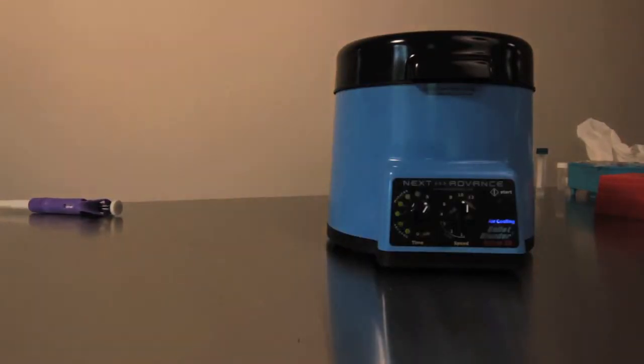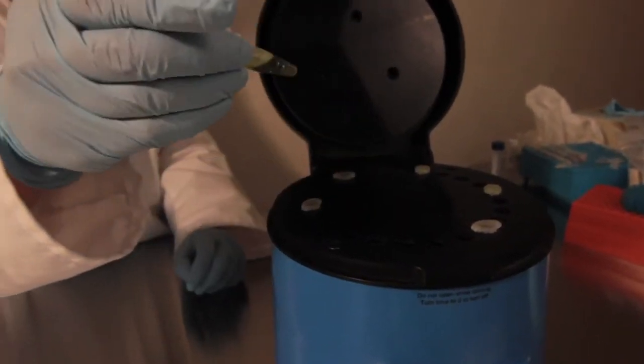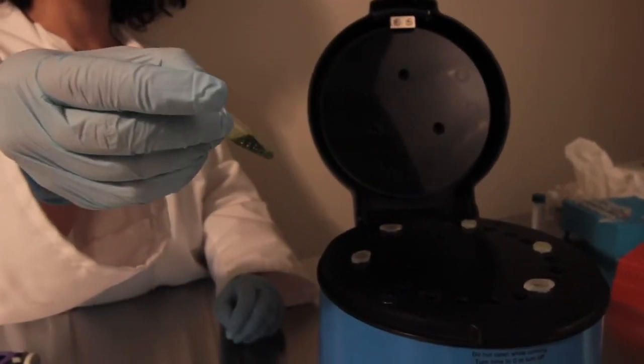Examine your samples. If you see unhomogenized pieces, place them back in the bullet blender and homogenize for another minute or two at speed 10.